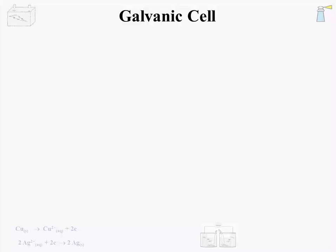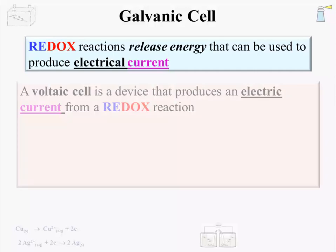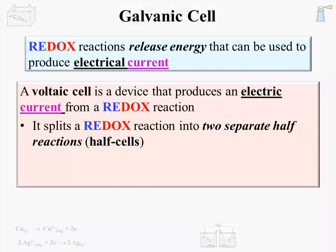Our first new topic is the voltaic or galvanic cell. In essence, it is a directed redox reaction. Redox reactions release energy that can be used to produce electrical current, and the current is used to do work. A voltaic cell is a device that produces an electrical current from a redox reaction. It does this by splitting a redox reaction into two separate half-reactions, called half-cells, which are physically separated from each other.